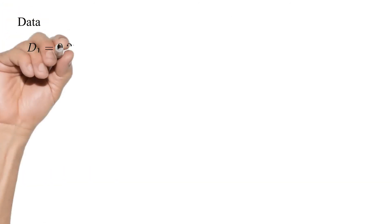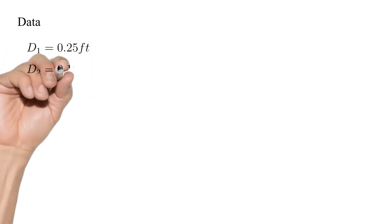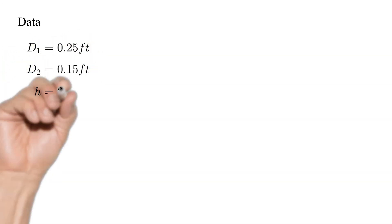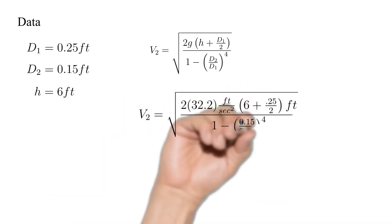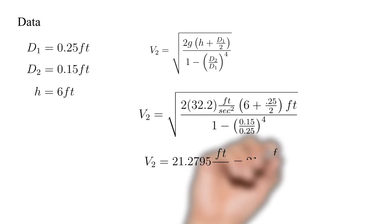The values for D1, D2, and H are given here. Notice that we are using English engineering units. English? Who needs that? I'm never going to England. Plugging in those values we get that V2 is equal to 21.3 feet per second.